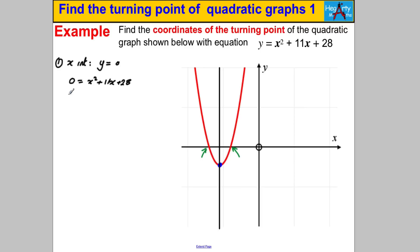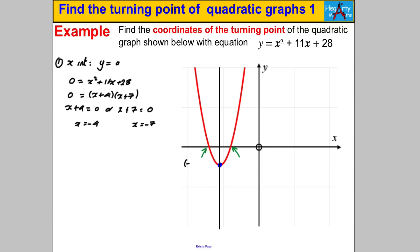That factorises nicely to (x + 4)(x + 7). Therefore x + 4 = 0 or x + 7 = 0, giving us x = -4 or x = -7. So the coordinates of the two x-intercepts are (-7, 0) and (-4, 0).